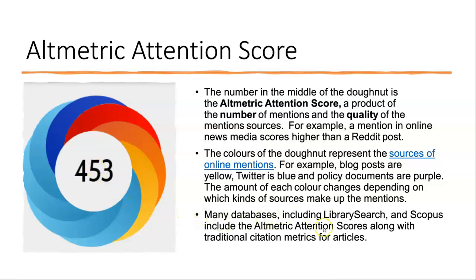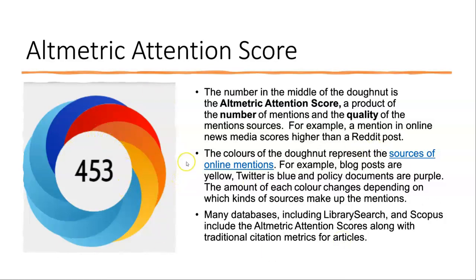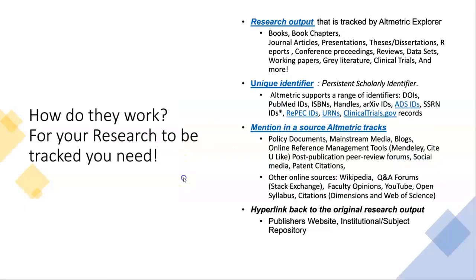Many databases, including Library Search and Scopus, include the altmetric attention score along with traditional citation metrics for articles. So often when you find an article in Library Search or in Scopus, you'll see this donut displayed beside it, giving you details on the attention that item is receiving.